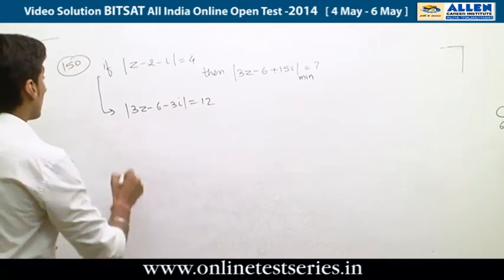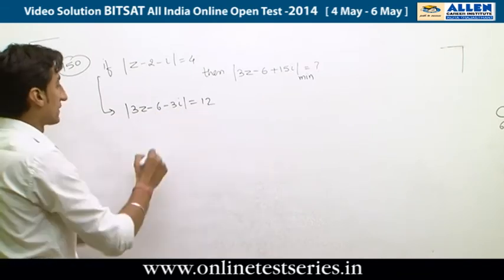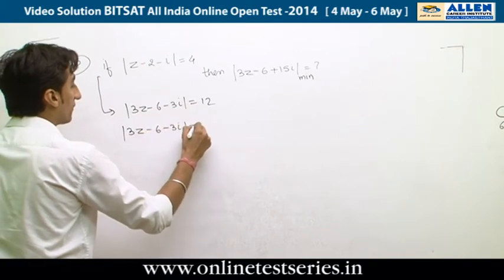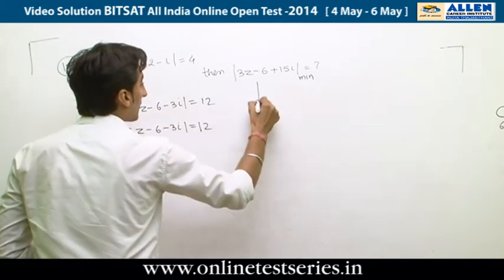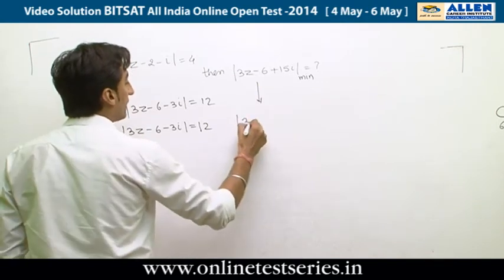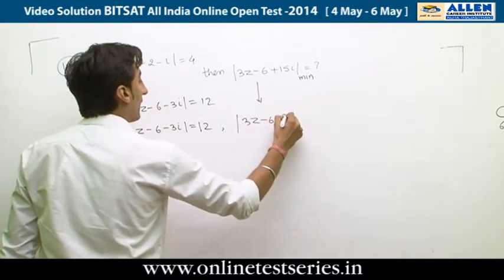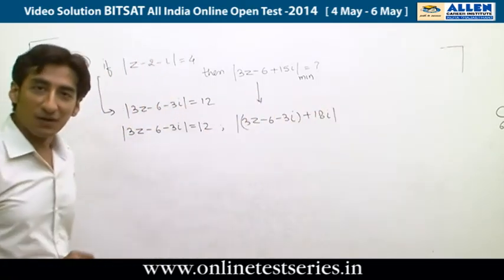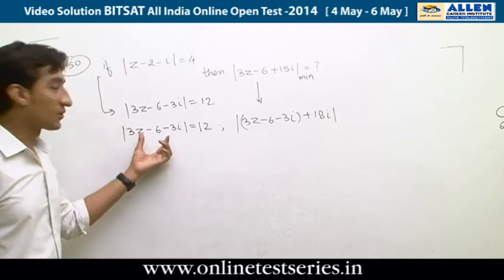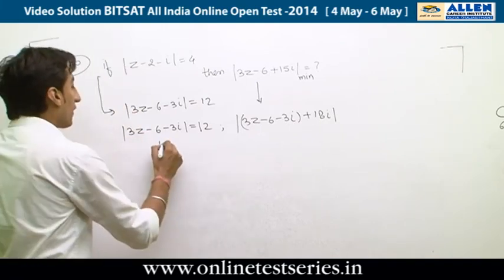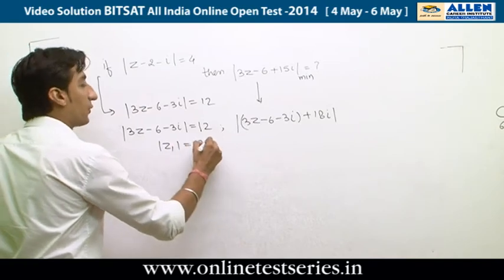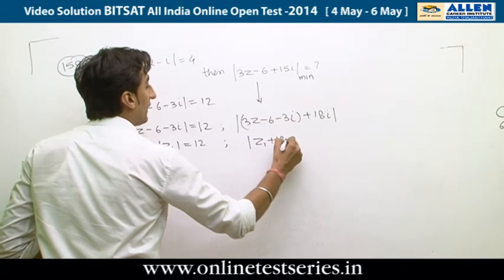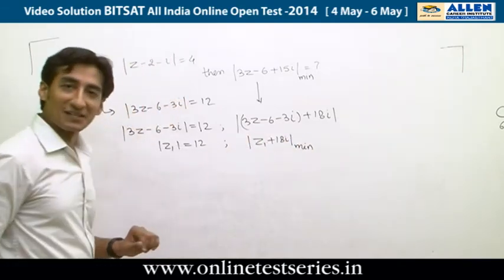The expression |3Z - 6 - 3iη| = 12 represents a circle. We let Z1 = 3Z - 6 - 3iη, so |Z1| = 12. We then need to find the minimum value of |Z1 + 18iη|.